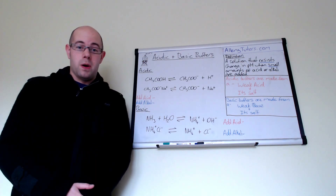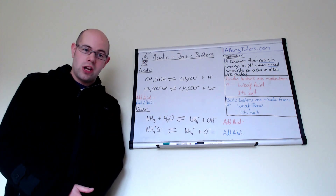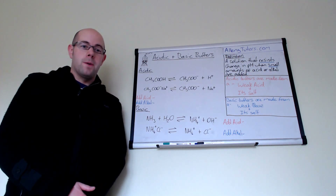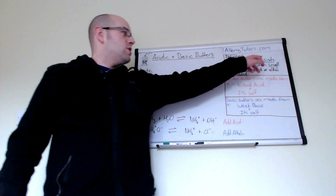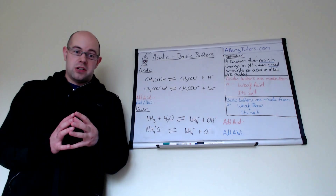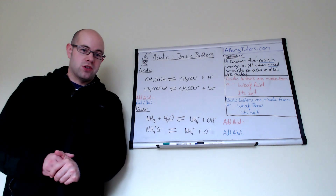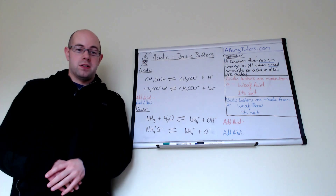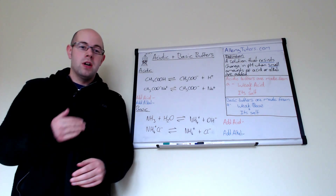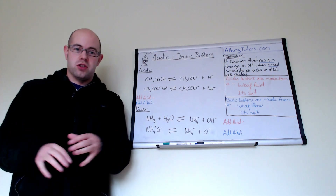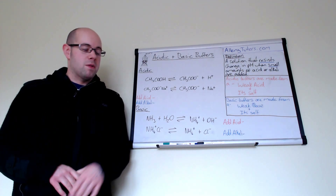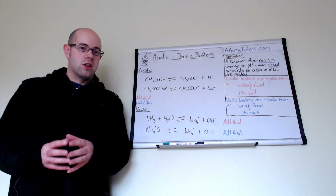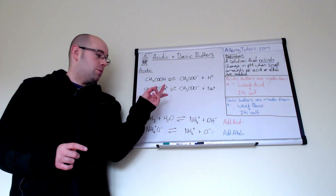A buffer is basically a solution that resists a change in pH when small amounts of acid or alkali are added to it. The key words here are 'resists' and 'small.' A buffer doesn't actually stop the pH from changing — it just slows it down. It resists it, and it only does that if a small amount of acid or alkali is added. Buffers can't cope when you add large amounts of acid or alkali. So it is restricted to certain criteria, but you do have to know the definition. Understanding the definition also helps you work out chemically what's happening to a buffer.